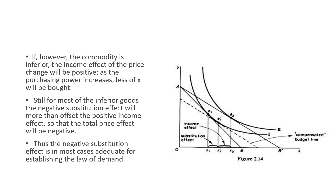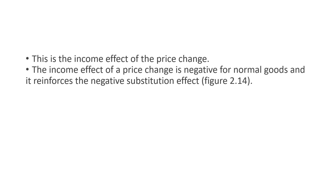For most inferior goods, the negative substitution effect will more than offset the positive income effect, so the total price effect — which is the combination of income effect and substitution effect — will still be negative. This negative substitution effect is adequate for establishing the law of demand, which establishes a relationship between the price of a commodity and the quantity purchased. For normal goods, the income effect of a price change is negative and reinforces the negative substitution effect. That's all for today's video — please like, share, and subscribe for more videos. Thank you for watching.